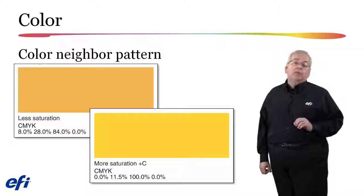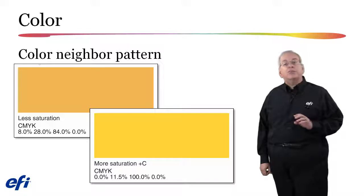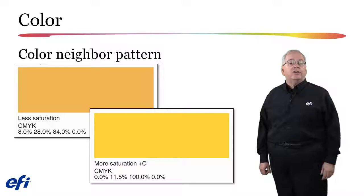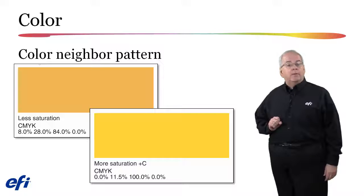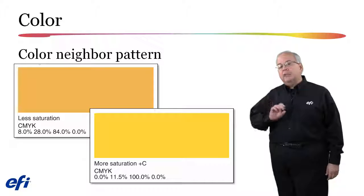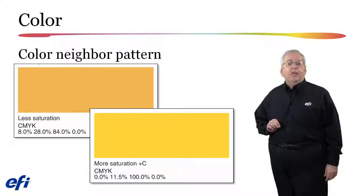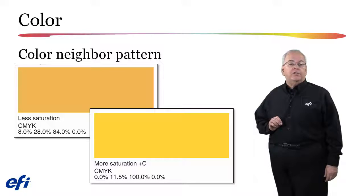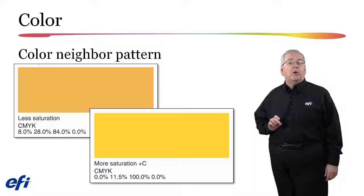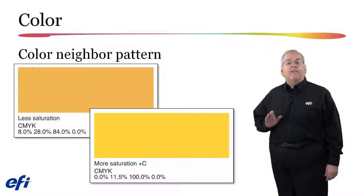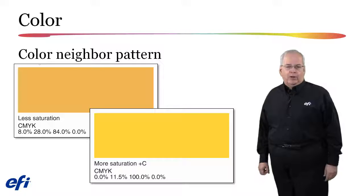If you close the color editor, you will lose the capability to use the point-and-click color variations interface to select the best color, but you will be able to type in the values from the printed sample directly into the spot color interface. For additional details on how to use the spot color variations feature, please refer to the standalone color variations video available from the What's New landing page, available from a link on the Fiery Welcome screen.